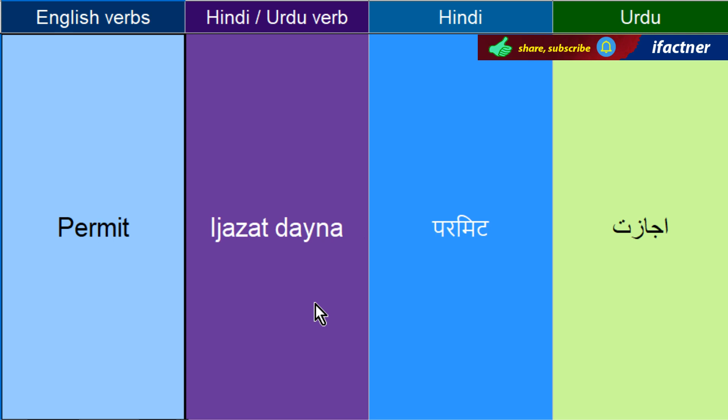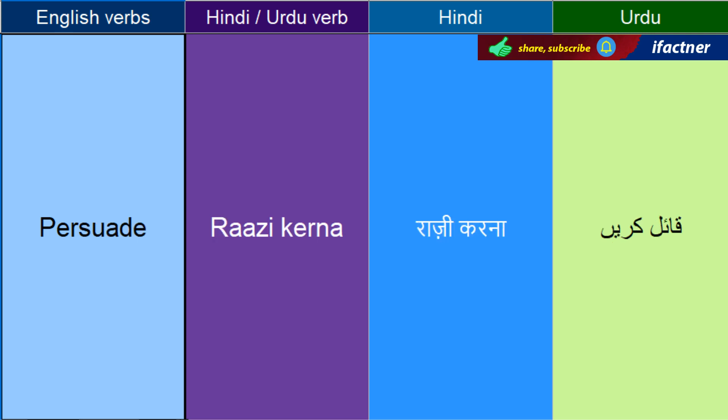Ijazat dayne ko kehthay hain — Permit. Kisi ko kisi cheez ke liye kaam kerne ke liye, kaail kerne ko, raazi kerne ke liye — us ko kehthay hai Persuade. Why are you persuading me to go there? — aap mujhe kyoon kaail keray rahe hain ke mein wahaan jau?